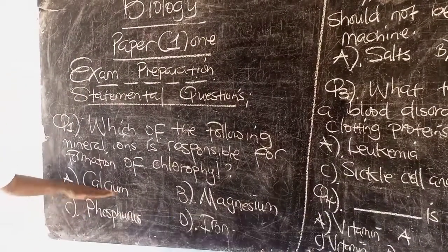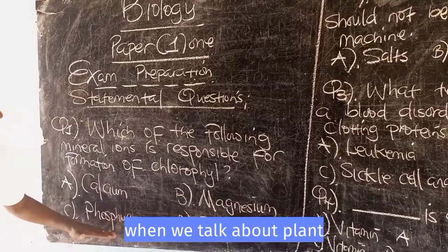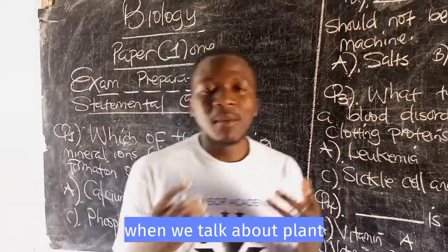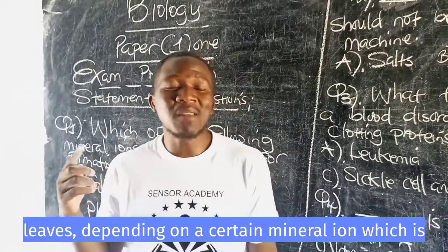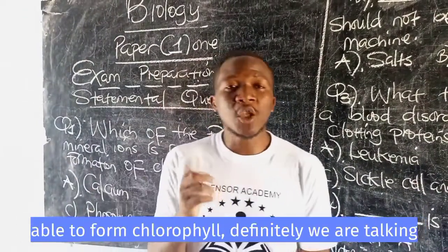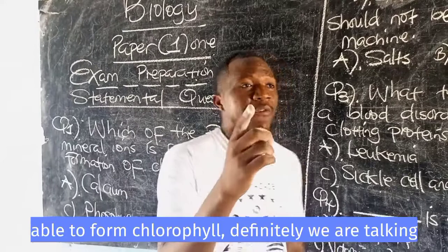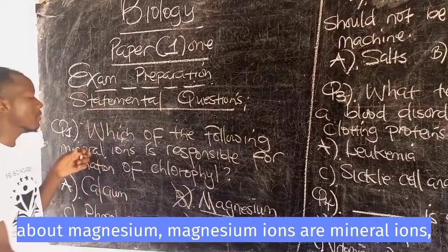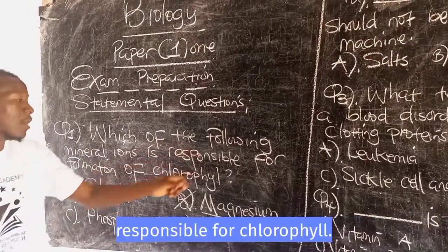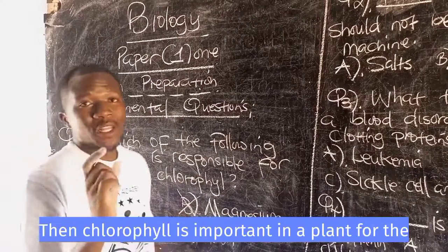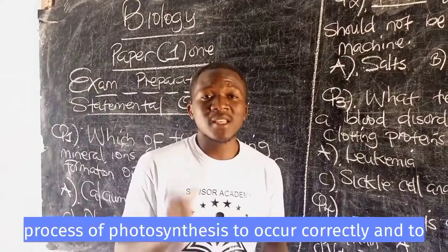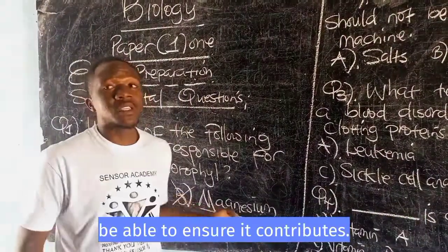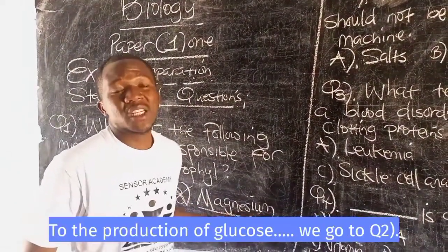We have our answer options: Potassium, Magnesium, Phosphorus, and Iron. When we talk about plant leaves depending on a certain mineral ion to form chlorophyll, we are talking about Magnesium. Magnesium ions are the mineral ions responsible for chlorophyll, which is important in a plant for the process of photosynthesis to occur correctly and to ensure it contributes to the production of glucose.